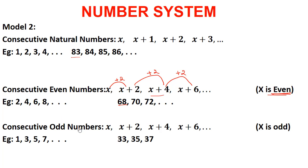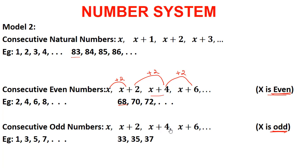Likewise, we have consecutive odd numbers — odd numbers in a row. For example, 1, 3, 5, 7 are consecutive odd numbers, coming one after the other in succession. Consecutive odd numbers are also represented as x, x+2, x+4, x+6 and so on, where x is odd. The difference between two consecutive odd numbers is always 2, so adding 2 each time gives the next one.